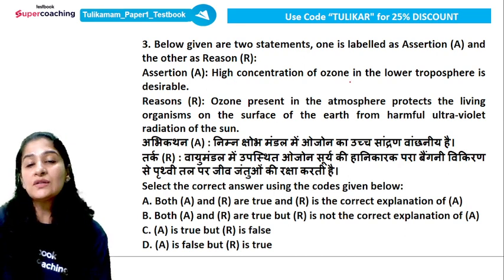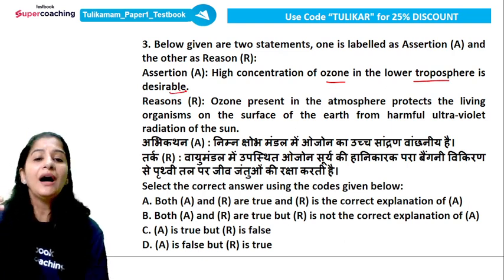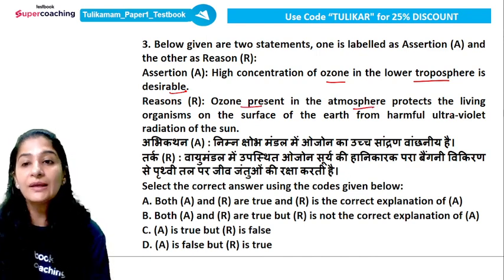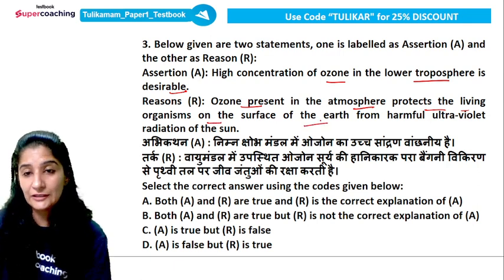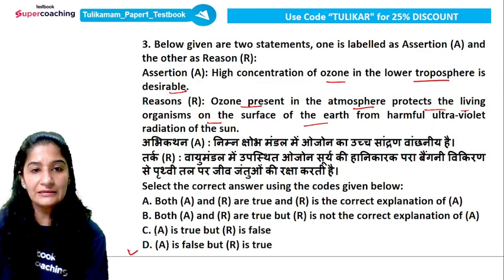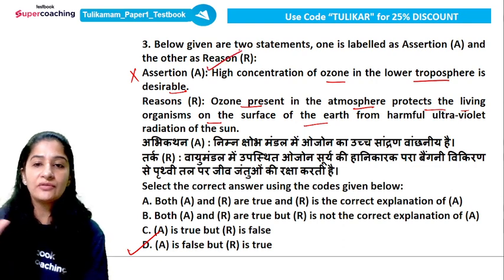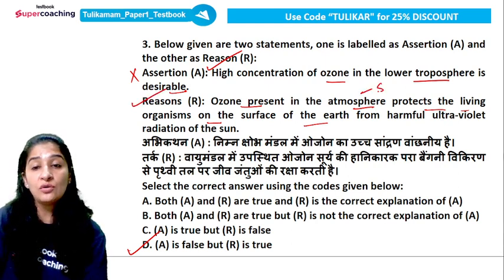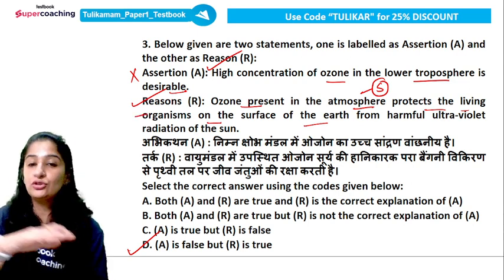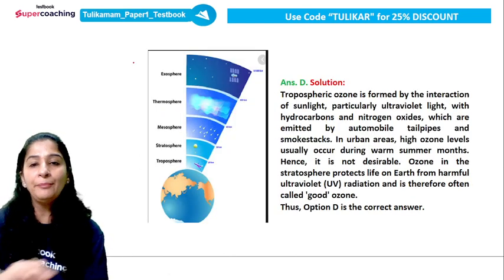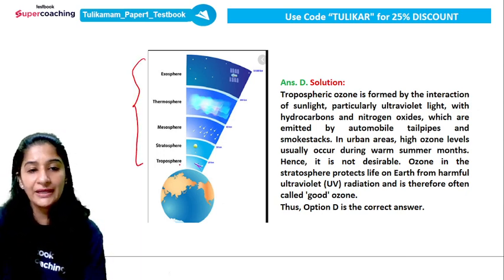Now another question from previous years: 'High concentration of ozone in the lower atmosphere is desirable because ozone present in the atmosphere protects living organisms on the Earth's surface from harmful ultraviolet radiation.' As you can see, option D is the right answer — option A is completely false. High concentration of ozone in the lower atmosphere is NOT desirable. And yes, it is the good ozone — the stratospheric ozone — that protects life forms on the surface of the Earth from the ultraviolet radiation of the sun.